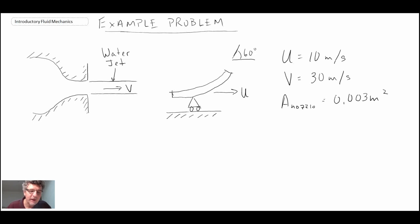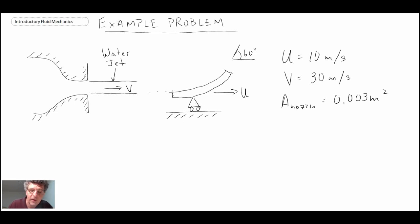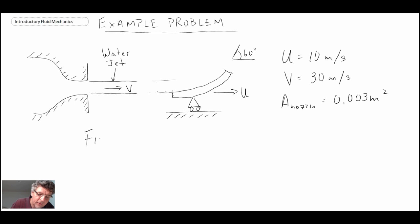What we have here is a water jet flowing from left to right, impinging upon a blade. That blade is on rollers, and consequently it is free to move to the right due to the water jet impinging upon it. We are told to find the force.